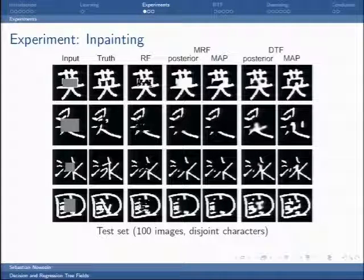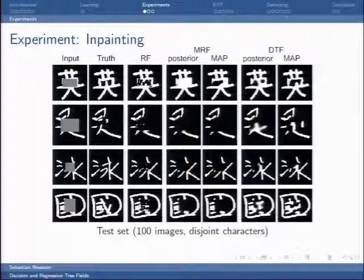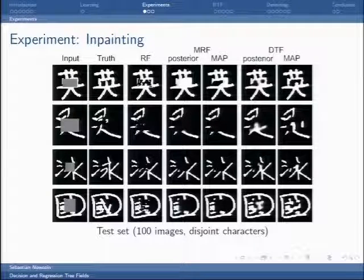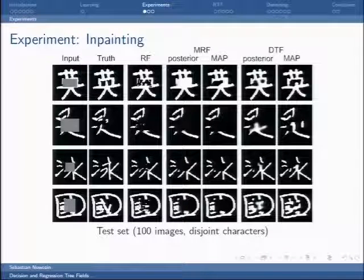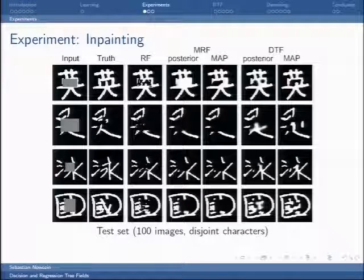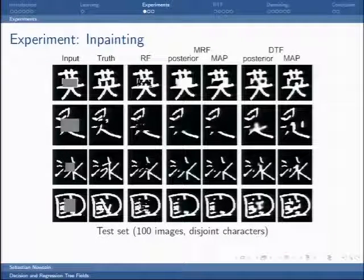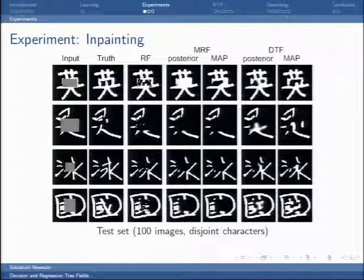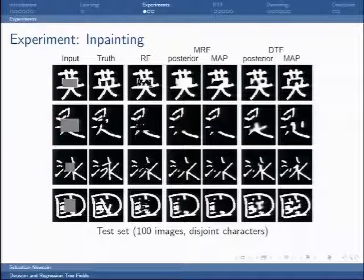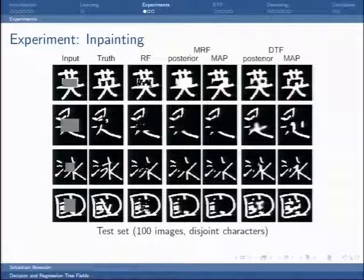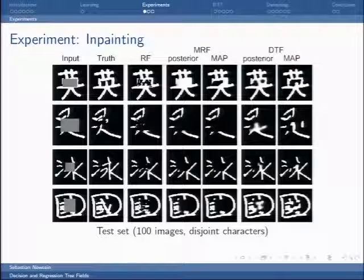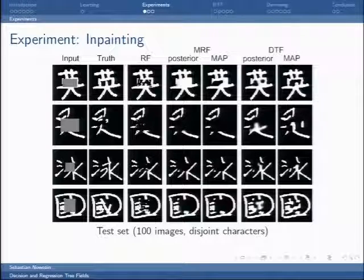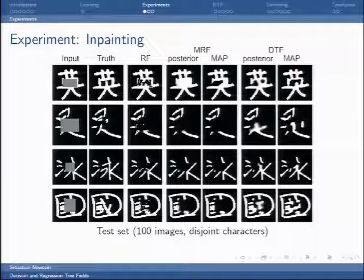In the ICCV paper we had only very small scale applications, a little bit contrived to show that the model is really expressive and can model certain structures. We had the task we made up, Chinese character in-painting. You're given a Chinese character with an occluding box and you need to in-paint, remove the grey box. This is really difficult because you have binary random variables and need to model things like stroke widths, preferences for horizontal and vertical strokes. The MRF does just some intelligent smoothing. The decision tree field can do more meaningful completions.